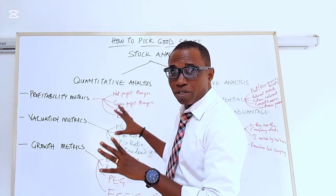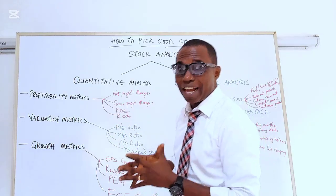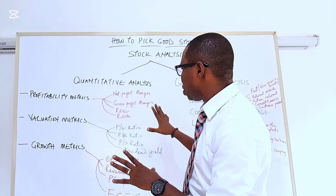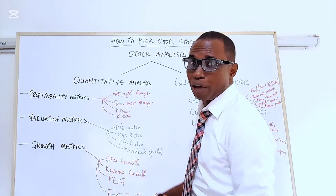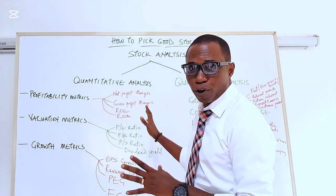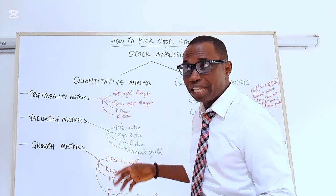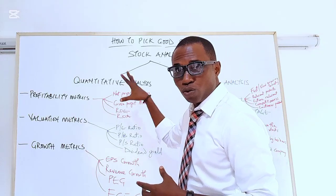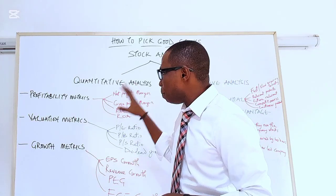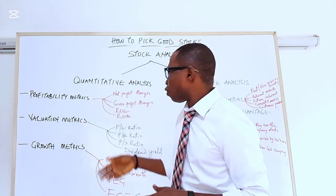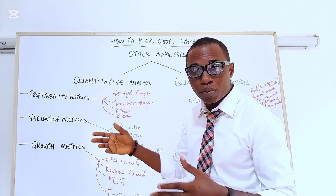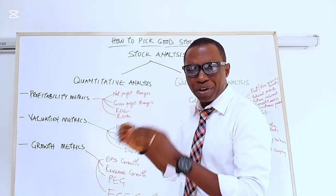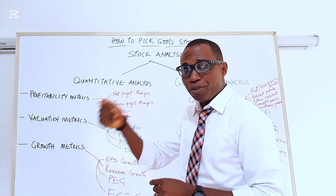Let's talk about quantitative analysis, where you just need to know basic metrics. These metrics are not something you have to calculate yourself — there are platforms where they have already been calculated. You only have to apply filters to find stocks that meet your criteria. For instance, if you want a net profit margin greater than 20%, it will bring up results based on that criteria.